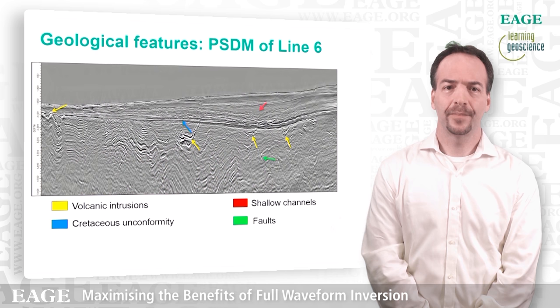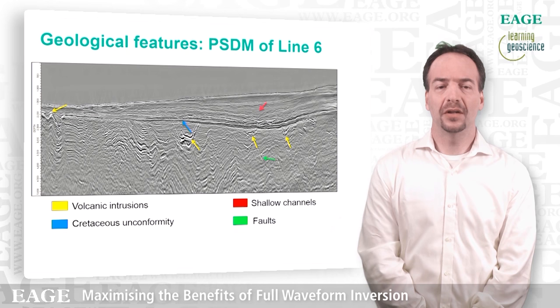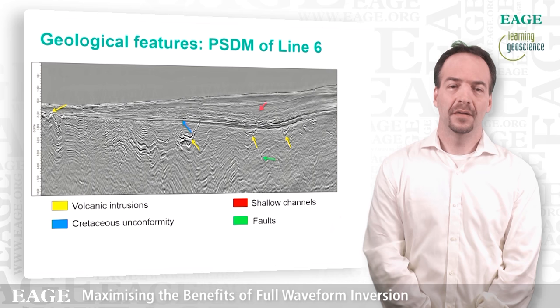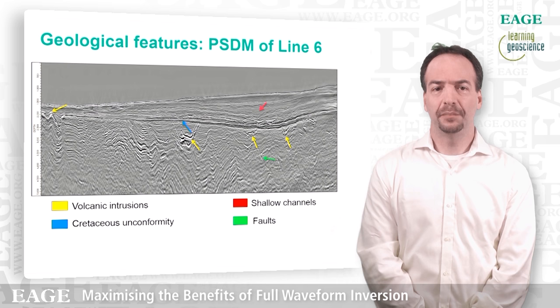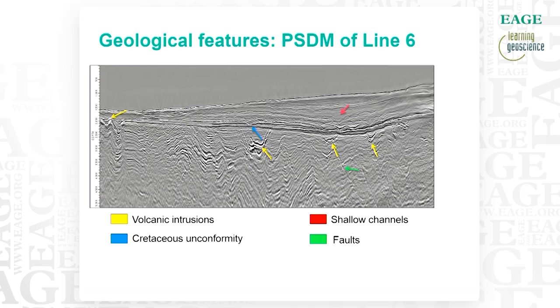Before I show you the result of the FWI, I'll give you a chance to familiarize yourself with the geology we are trying to invert. This is line 6 from the 2D line set. We have several geological features that are really interesting. With the yellow arrows I highlight several volcanic intrusions that are widespread in this area. With the blue arrow you can see the Cretaceous Unconformity that divides two geological subdomains: the shallow part characterized by canyons and channels, and the deeper part characterized by large tilted fault blocks.